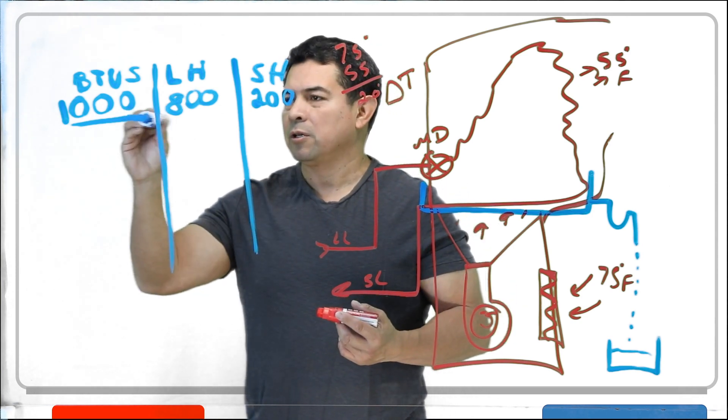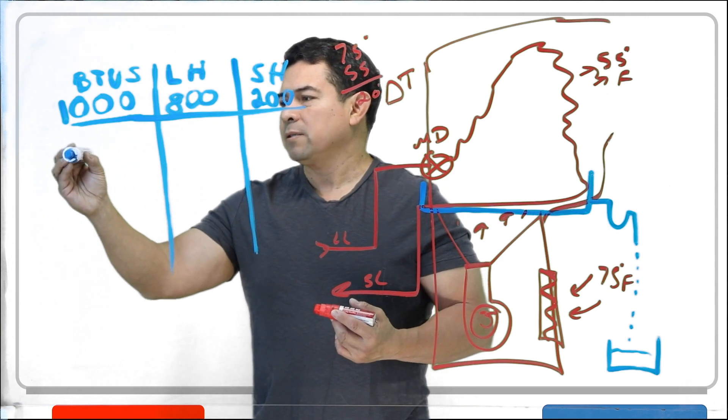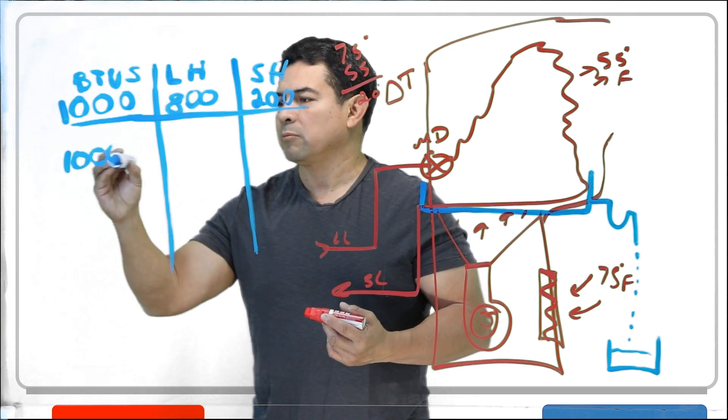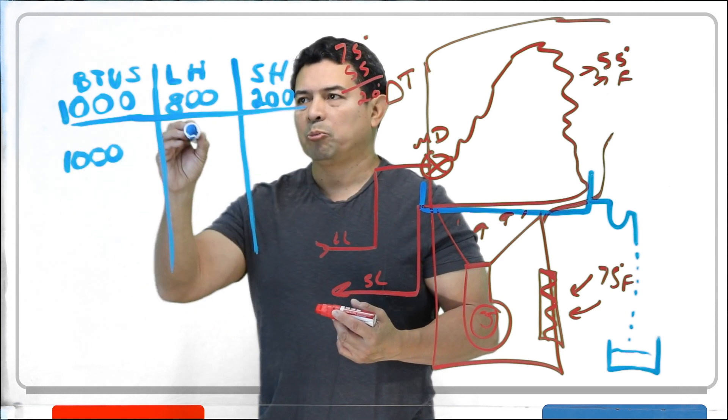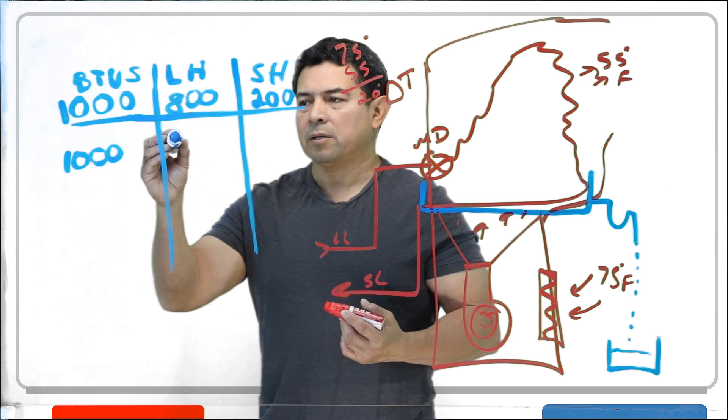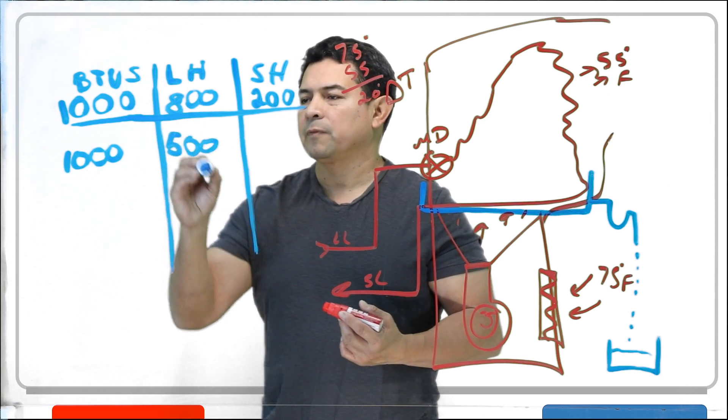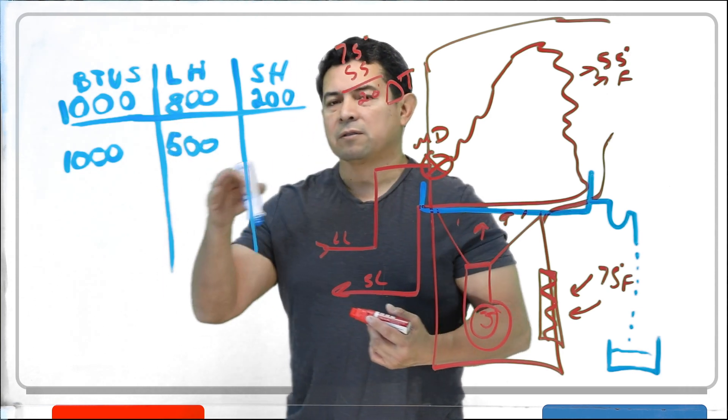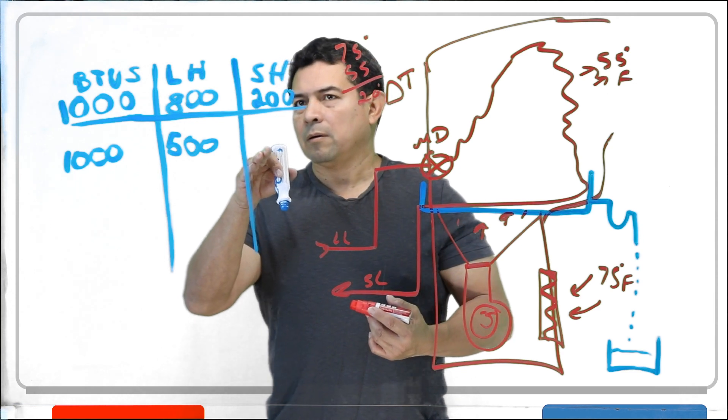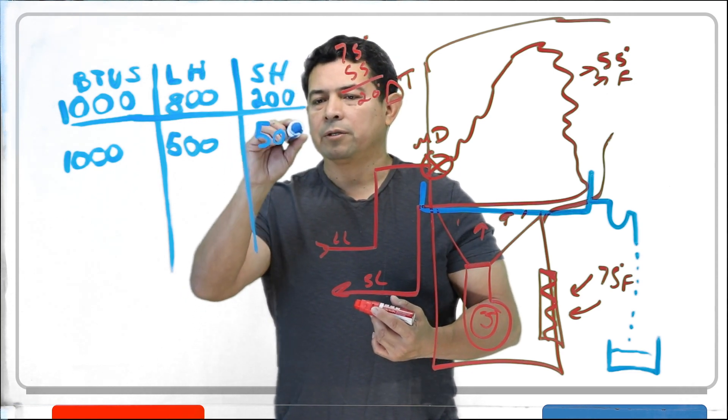But then, as the unit runs and it runs and it runs, guess what? It's still going to absorb 1,000 BTUs, but the latent heat, it's going to be less. So now, let's say this drops down to, let's say, 500 BTUs. Because of that, how much sensible heat are we going to be removing? 500, like this.